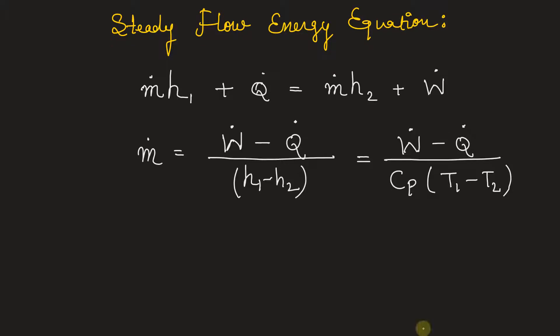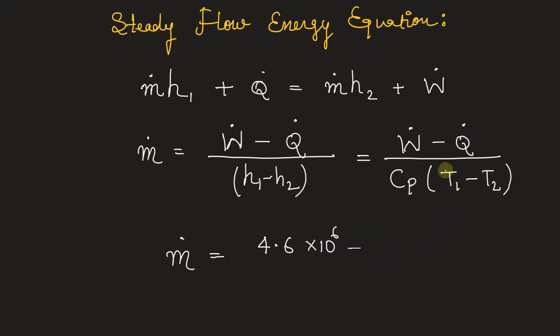Now we can find the mass flow rate from here, because all the other quantities are given in the problem. So work done by the system or by the gas turbine is 4.6 megawatt, megawatt into 10 to the power 6 for mega. So now this quantity is in watt, that is joule per second, minus the heat flow rate that is negative 300 into 10 to the power of 3. Because heat is getting out of the system, that's why we will use negative sign.